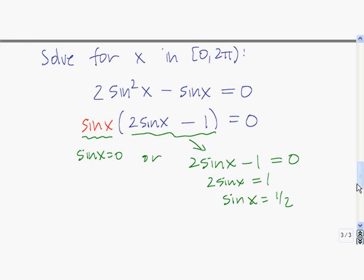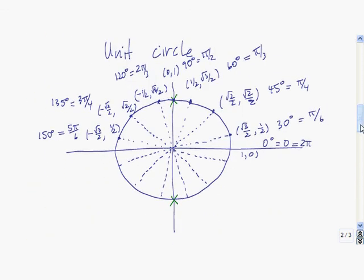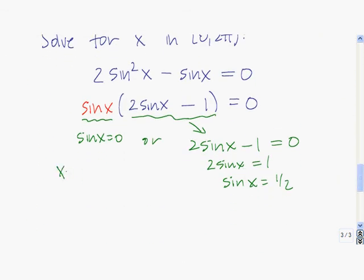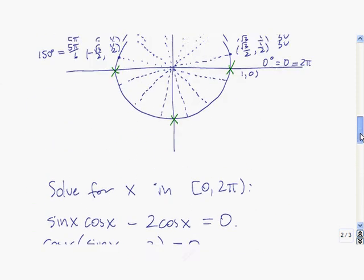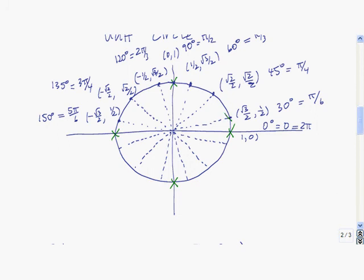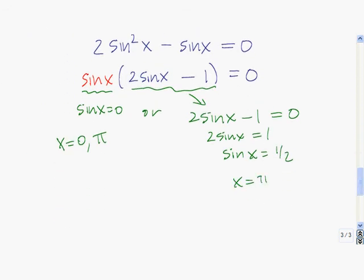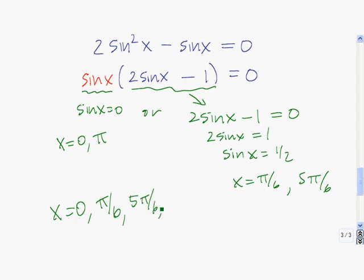Sine of x is equal to 0 at this spot, which is 0 radians, and this spot, which is pi radians. Then we want to find out where sine of x is equal to 1 half: sine of x equals 1 half at this angle, pi over 6, and this angle, 5 pi over 6. So all of our solutions are x equals 0, pi over 6, 5 pi over 6, and pi.